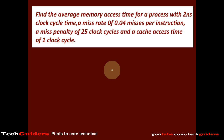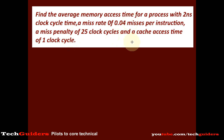Find the average memory access time for a process with a 2ns clock cycle time, a miss rate of 0.04 misses per instruction, a miss penalty of 25 clock cycles, and a cache access time of 1 clock cycle.